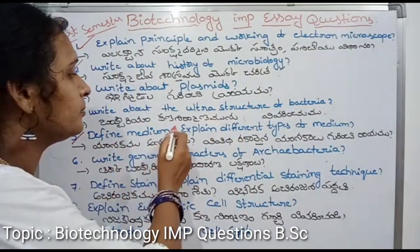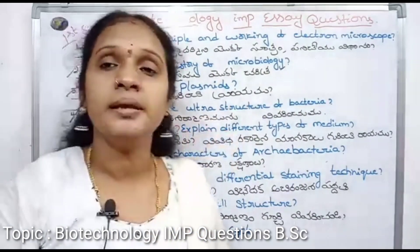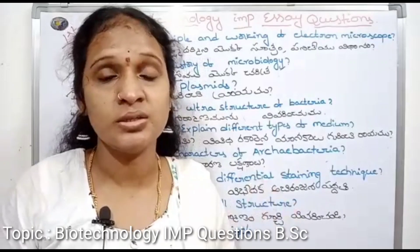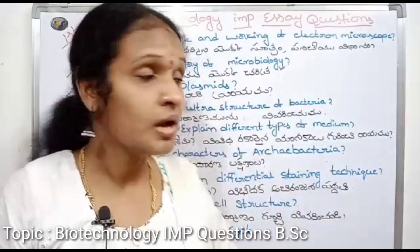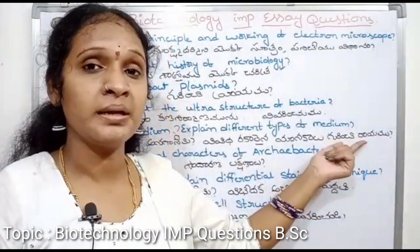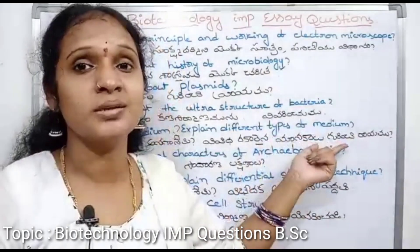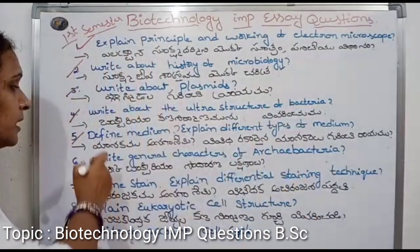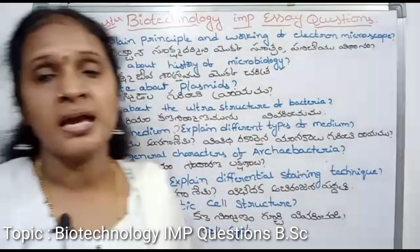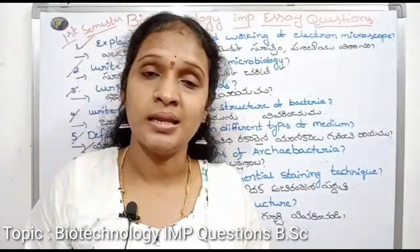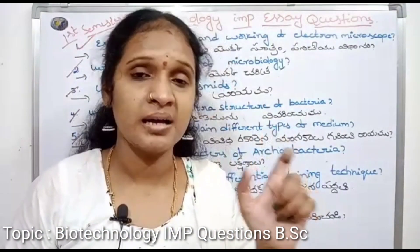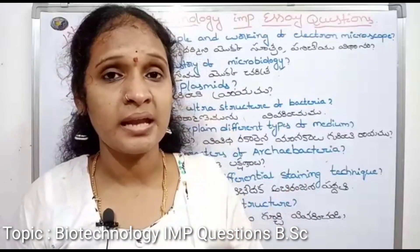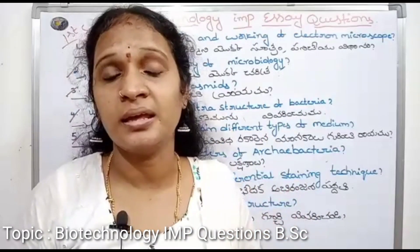Define medium and explain the different types of medium. Medium means nutrition. There are different types of medium. You can see the DNA and there are many different types of culture media.